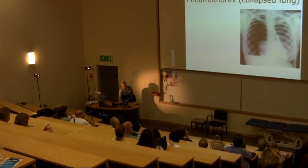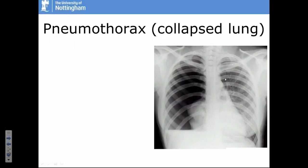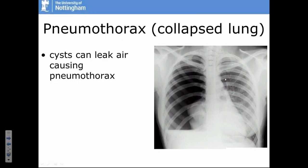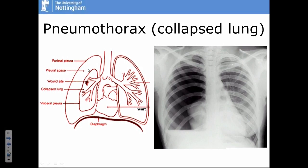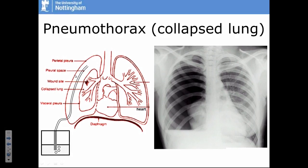A pneumothorax occurs when the little lung cysts on the CT scan leak air outside the lung and the lung collapses down — this can be really quite difficult to treat in LAM. A little cyst leaks air, which escapes out around the lung, and the lung collapses away from the chest wall. The treatment is to remove the air from this space by putting a tube between the lung and the chest wall and draining the air out through an underwater seal drain. Some patients need surgery to fix this definitively.